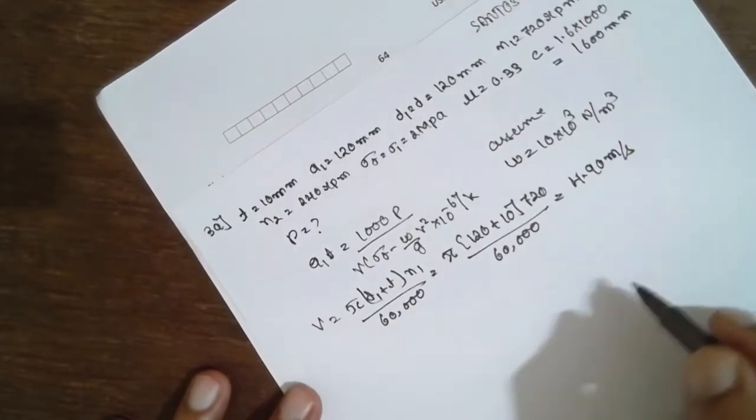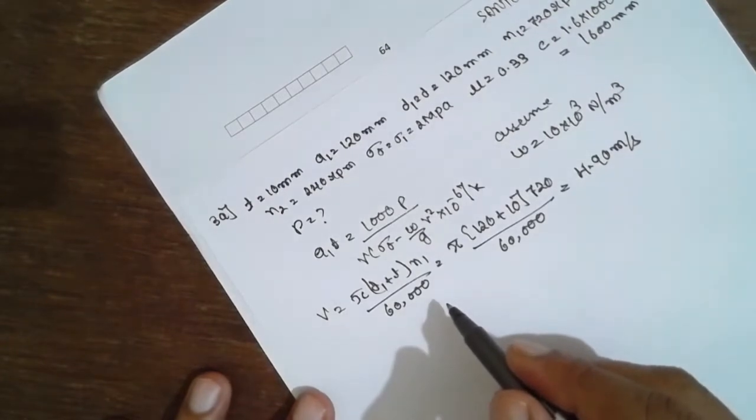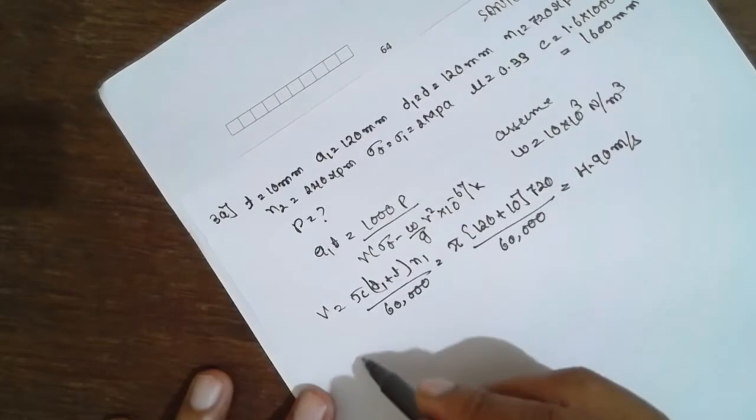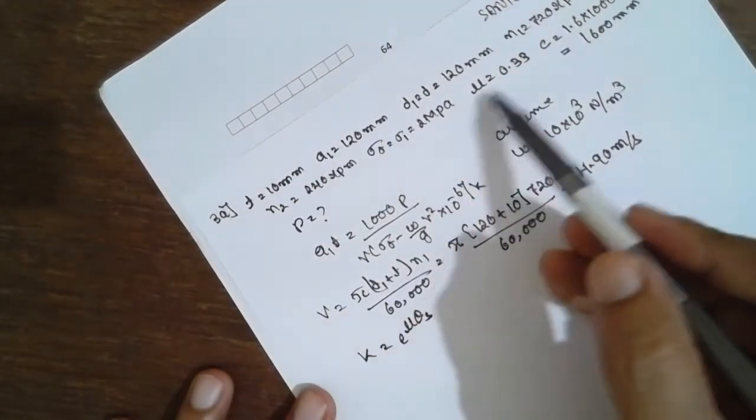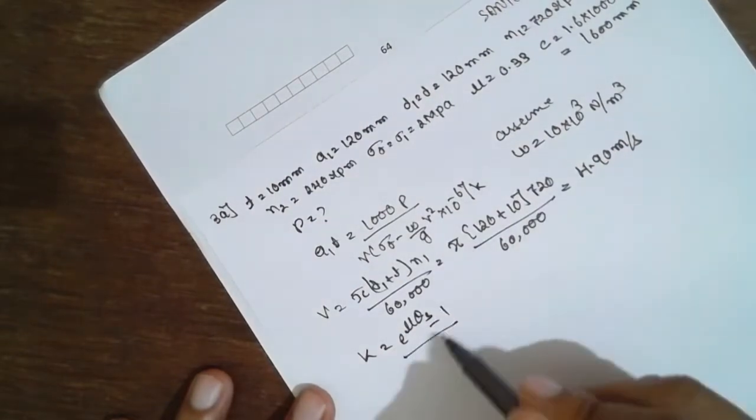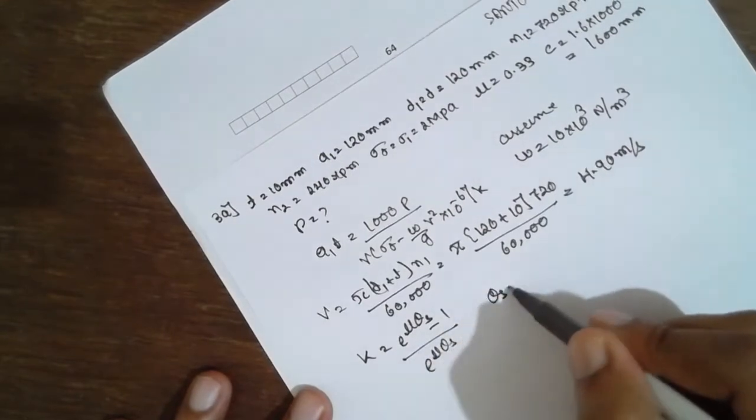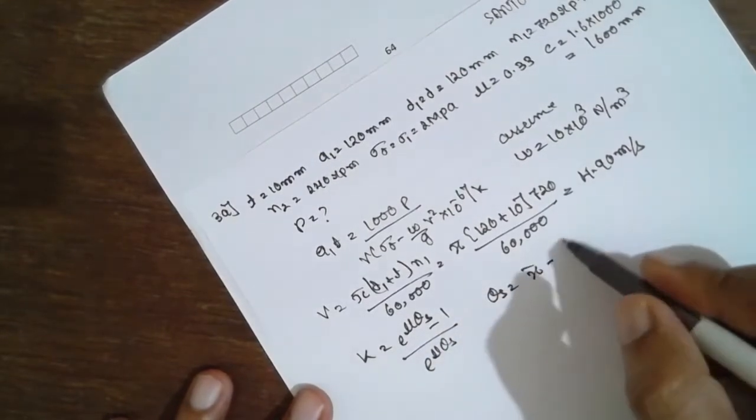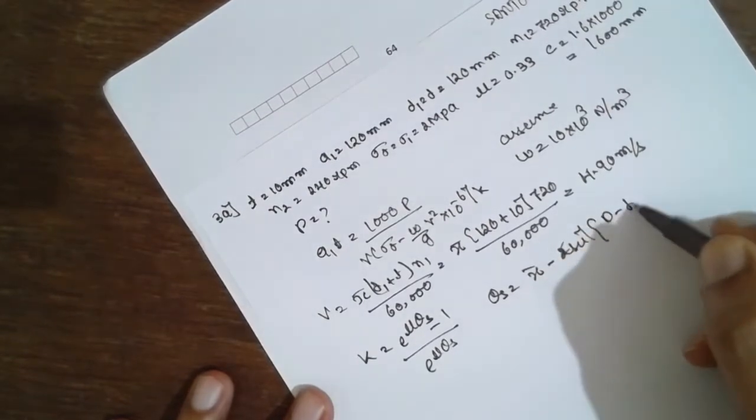Once you know this, we require k. What is k? k = (e^(μθ_s) - 1)/e^(μθ_s). If the single mu is there, you have to consider theta_s. We have to find out theta_s. Theta_s = (π - 2sin⁻¹(D-d)/(2c)) × π/180.